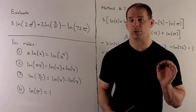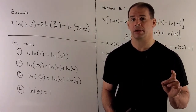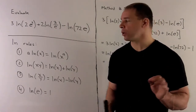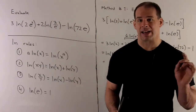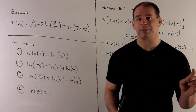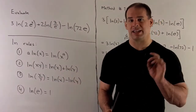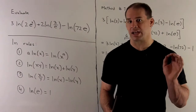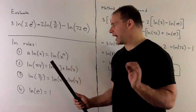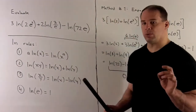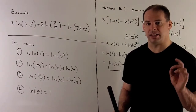First, let's review the rules for natural log. The first rule: if I take natural log of x multiplied by a constant a, I'm allowed to move the constant to the inside as an exponent. So a times natural log of x equals natural log of x to the a.